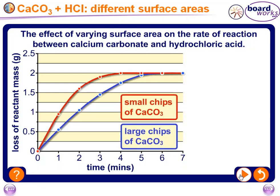Comparing the two experiments: with smaller chips the reaction time was 4 minutes, whereas with larger chips it was 5 minutes. The smaller chips reaction took less time. Keep in mind that calcium carbonate is the limiting reactant, which is why the overall loss of carbon dioxide was 2 grams in both cases.